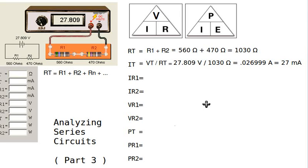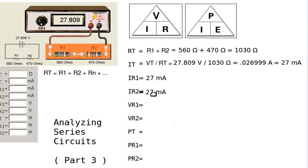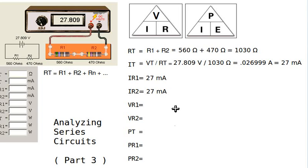Because this is a series circuit, that same current value flows through resistor 1 and also through resistor 2. We don't need to recalculate the currents — they're all the same since there is only one path around a series circuit. Next, we need to find the voltages across R1 and R2.